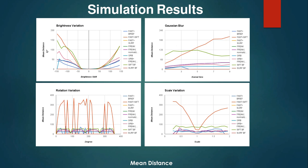The mean distance, which should ideally be lowest, is obtained to be lowest when the brightness shift is small in most algorithms. SURF has a very low and consistent mean distance performance. When Gaussian blur is introduced, FAST and SIFT perform really poorly for scale variation.